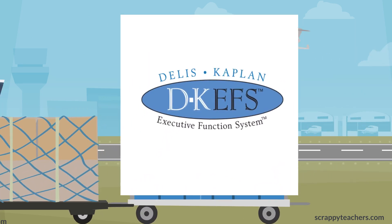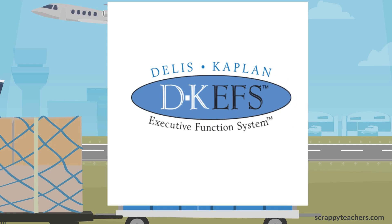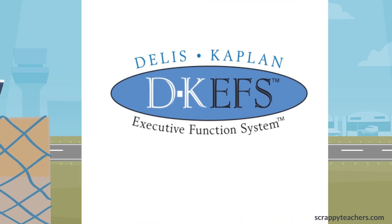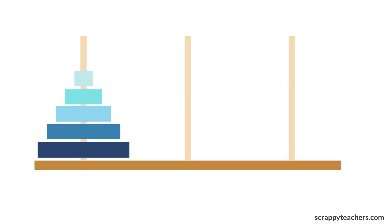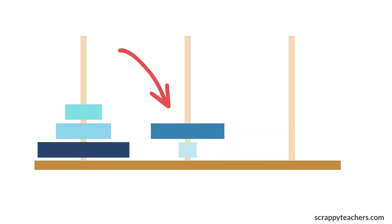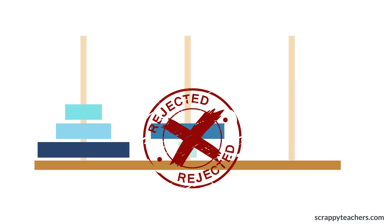I'll show you my favorite task, the Tower Test, because I think it's the most fun. Simple rules: move this pile to this peg, but you can only move one ring at a time, and you can't put a ring on top of a smaller one. For example, this would be no bueno.